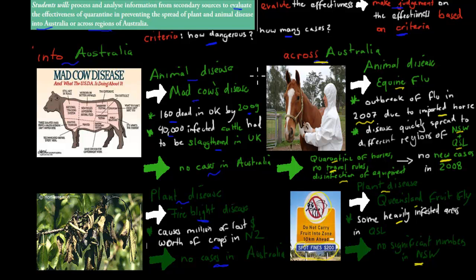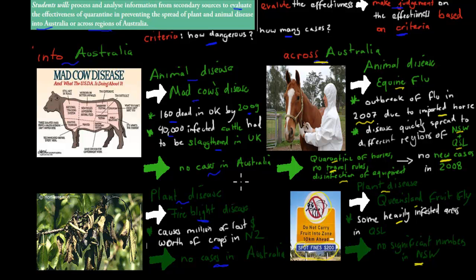The idea is you need to evaluate — make a judgment. I would say overall quarantine is quite successful. I would base it on criteria: these diseases are big problems in other parts of the world, but the spread has been reduced due to the fact that we have a pretty effective quarantine. You'd go into a bit of detail when you mention that as well.